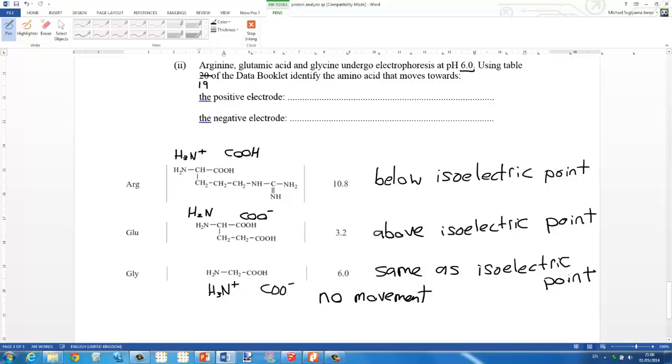Which amino acid will be attracted to the positive electrode? It will be the one with the negative charge so that will be glutamic acid. Then arginine will be attracted to the negative electrode because it has a positive charge. Thanks so much.